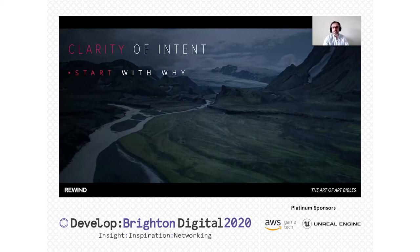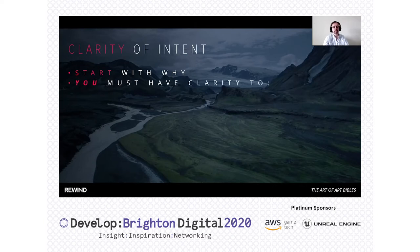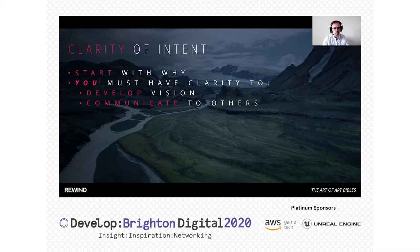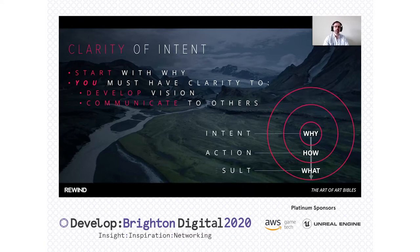So, clarity of intent — let's start with why. This is our raison d'être, why we're doing what we're doing, the nub of the aesthetic we're trying to pursue. You or we as the art directors must have clarity first of all, to be able to develop our vision and communicate it to others. We start with why, and from there we progress out to how and the what, giving us our intent, action, and result. What we're really after here is the communication of the aesthetic.